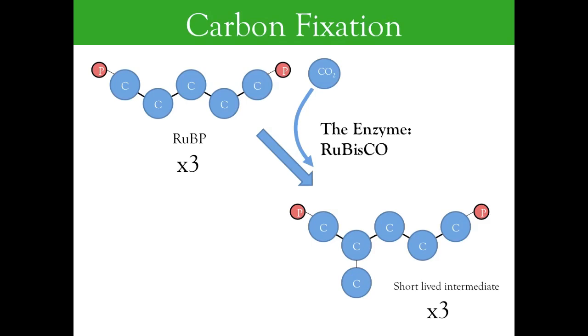The first stage of these dark reactions is called carbon fixation. In this critical step, an enzyme called rubisco takes carbon dioxide from the atmosphere and attaches it to each of three five-carbon molecules called RuBP. The result of carbon fixation is three new six-carbon molecules.